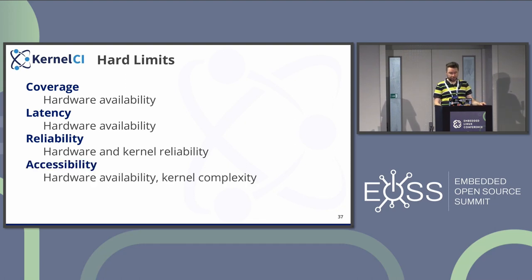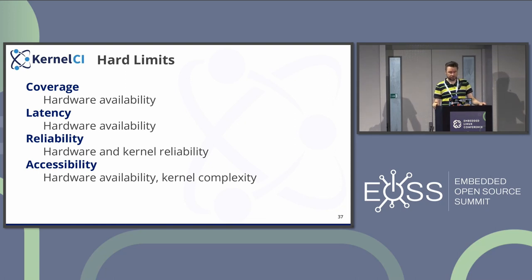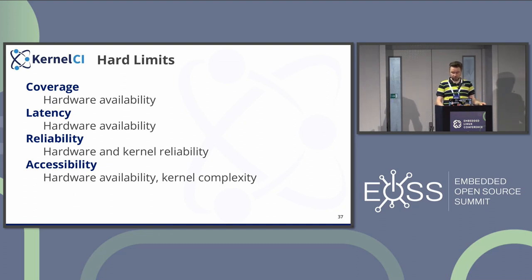For accessibility, again, hardware availability matters because understanding what's happening without access to hardware — which is often the case — is quite hard. That's the natural limit. The kernel complexity also affects it a lot, because the test can only be as simple as the kernel itself that it's testing.